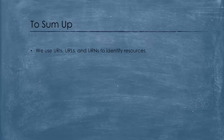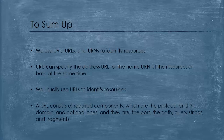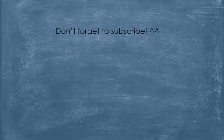To sum up, we've seen that we use URIs, URLs, or URNs to identify resources. URIs can specify the address or the name of the resource, or both at the same time. We usually use URLs to identify resources, and a URL consists of required components — the protocol and the domain — and optional ones: the port, the path, query strings, and fragments. So there you have it — no headaches anymore. I hope you find this video useful and you've learned something from it. Till the next video, keep learning and of course, stay tuned.